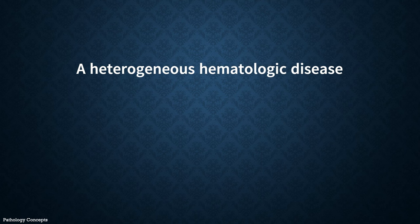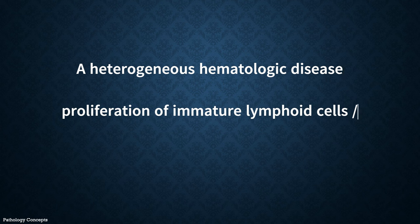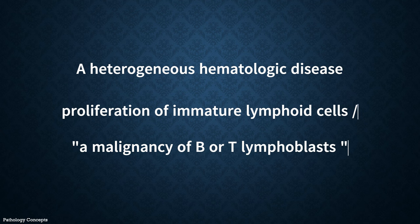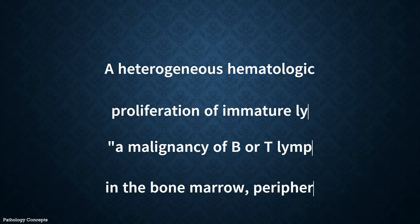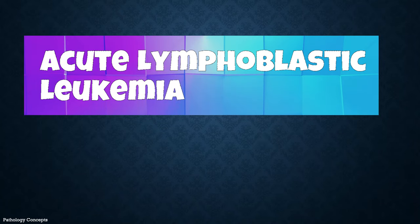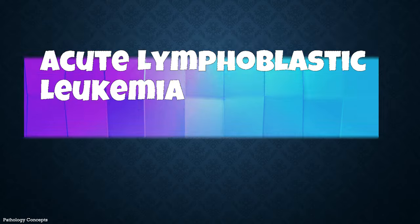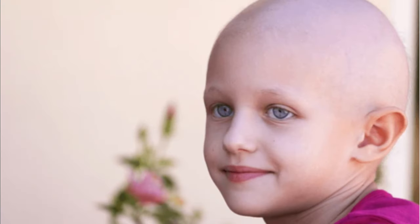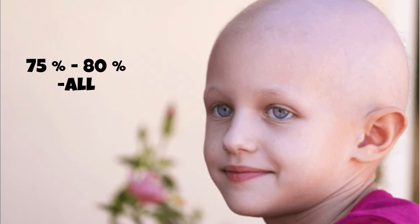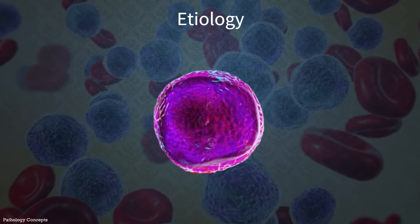Hello and welcome everyone. Today we are talking about a heterogeneous hematologic disease characterized by proliferation of immature lymphoid cells, or malignancy of B or T lymphoblasts in bone marrow, peripheral blood, and other organs — that is acute lymphoblastic leukemia. Acute leukemias are characterized by greater than 20% blasts in peripheral blood smear or bone marrow. Among all leukemias, 75 to 80% of childhood leukemia is of the ALL type, making it the most common form of childhood leukemia, although ALL can also occur in older individuals.